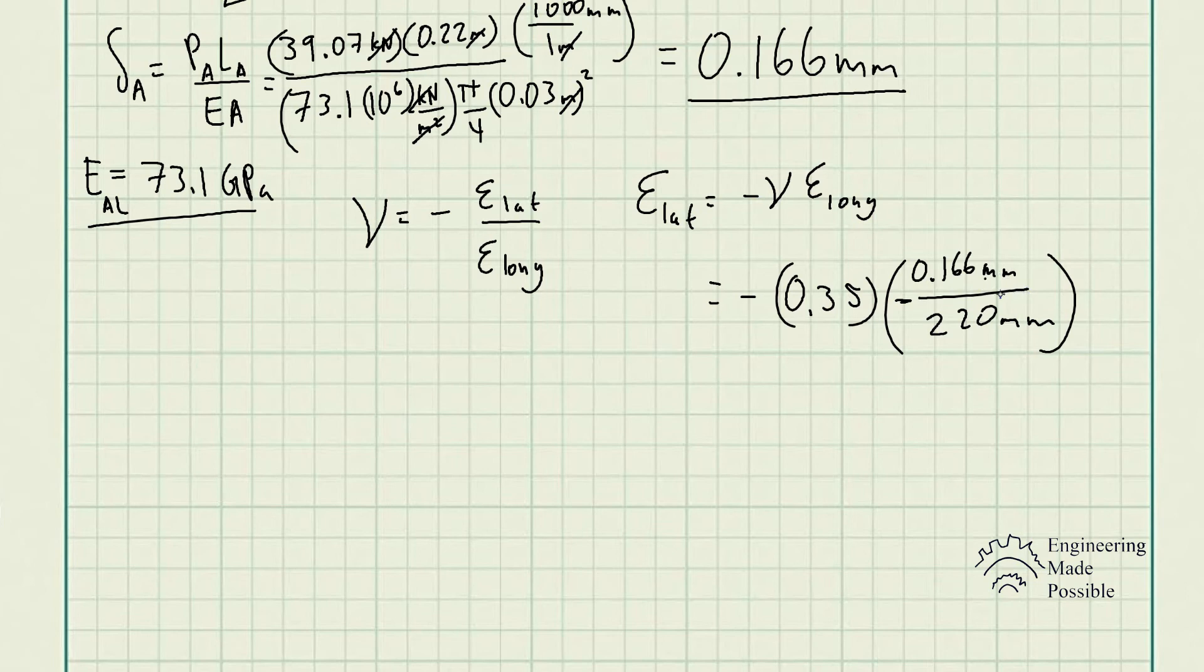But keep in mind, since it contracted or it shrunk, the final length was actually smaller than the initial length. And since we do the final minus the initial, this value will give us a negative sign here. So this is where this negative sign came from, divided by the original length of that cylinder, which is 220 millimeters. So now the negatives cancel out and we get the lateral strain being equal to 0.000264091. So this is the lateral strain.